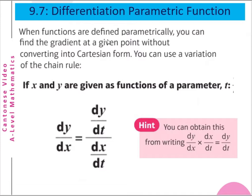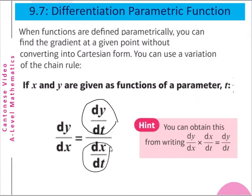For example, when functions are defined parametrically, you can find the gradient at a given point — that means dy/dx at a given point — without converting into the Cartesian form. You can use a variation of the chain rule. Thus, if x and y are given as functions of a parameter t, dy/dx is equal to dy/dt divided by dx/dt.